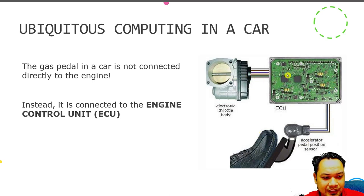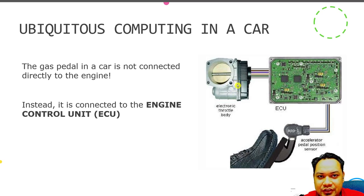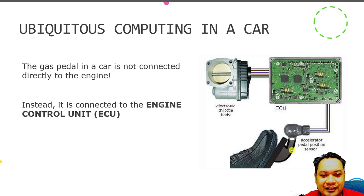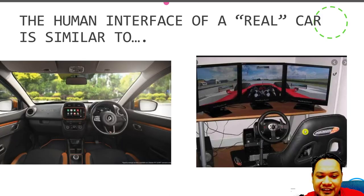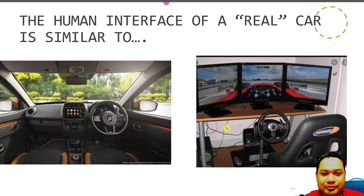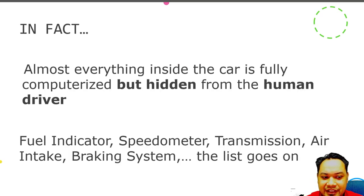The computer translates the force you apply on the foot pedal into an electronic or digital signal, and then tells the electronic throttle how much air intake to give the engine. So when you press the accelerator pedal, you are actually interacting with a computer — just like using a game simulator. Almost everything inside the car is fully computerized but hidden from the human driver.